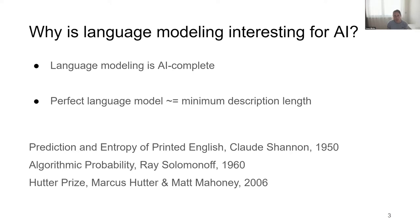The idea that language is AI-complete has been argued by many people in the past. For example, Claude Shannon, who developed information theory, spent quite a bit of time working on the entropy of English. His old paper contains character-based n-gram models — considered simple statistical models at the time — but somehow it became very hard to beat n-gram statistics in language modeling for many, many decades.